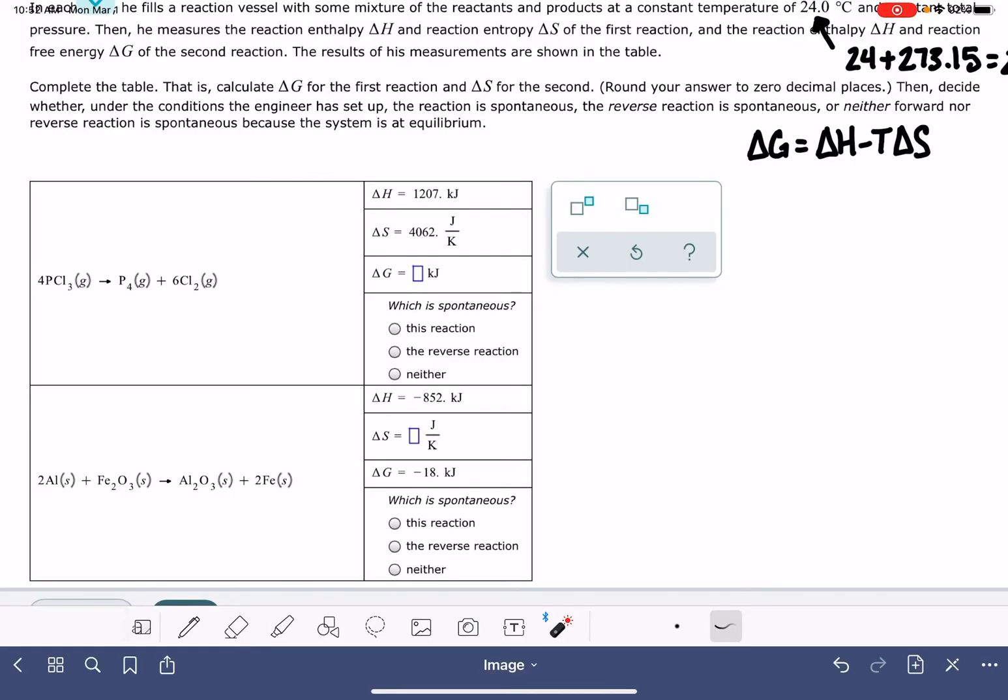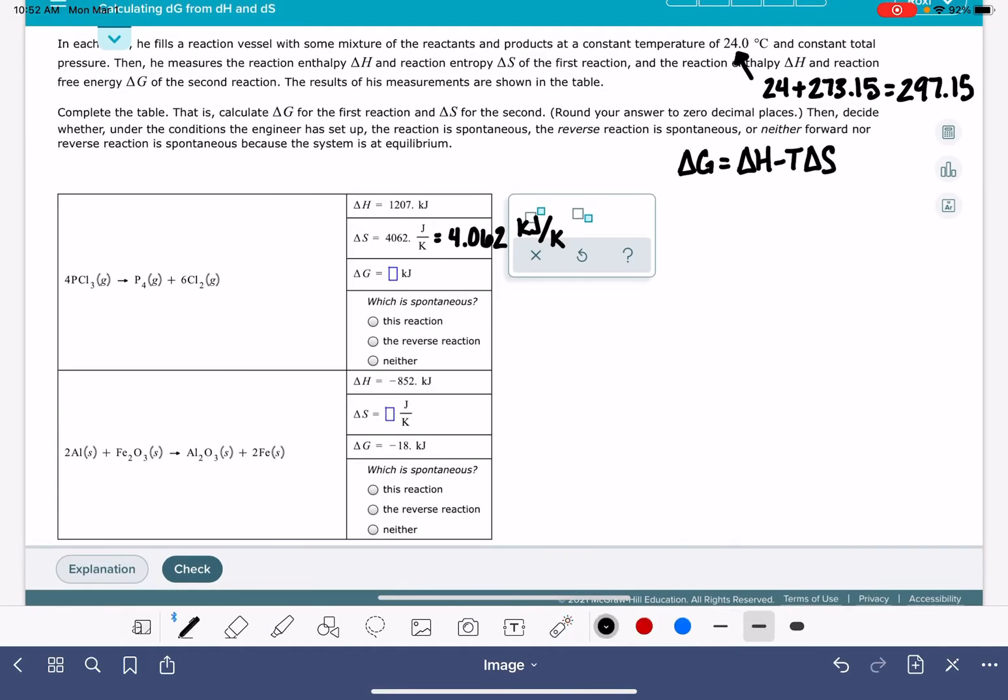You do want to be a little bit careful with this. Delta H and delta S don't have the exact same unit. One is in kilojoules, one is in joules. We want to look ahead at delta G and see the unit that we're being asked to give our answer. Delta G is kilojoules. So that means it would be smart for us to take this delta S value and just convert that into kilojoules. To do that, we'll just divide by 1,000. So this is going to be 4.062 kilojoules per Kelvin. And now we can go ahead and plug the delta H value and the delta S value and our temperature into this equation right here and solve for delta G.